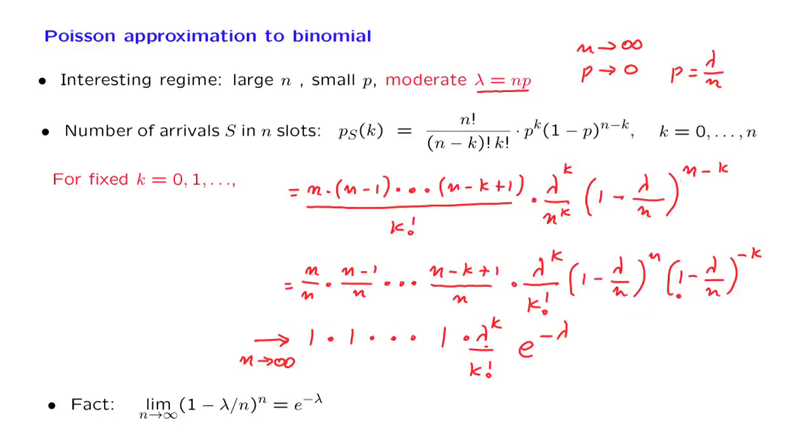And finally, let's look at the last term. Remember that k is fixed, is a constant. 1 minus lambda over n converges to 1. And when we raise that number to the kth power, we still get a 1 in the limit.